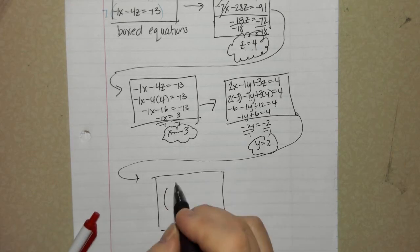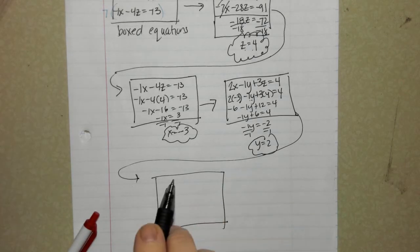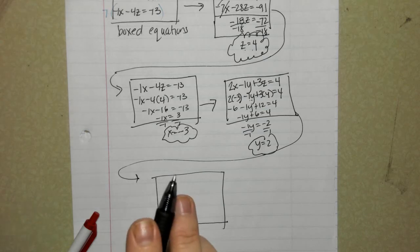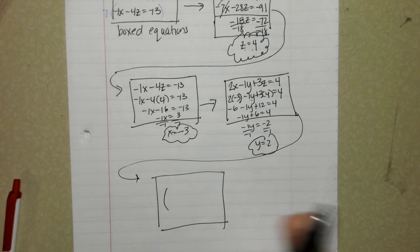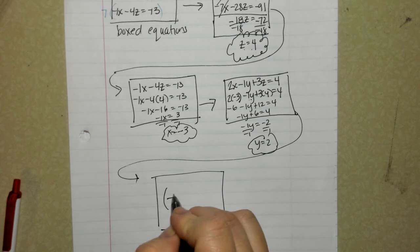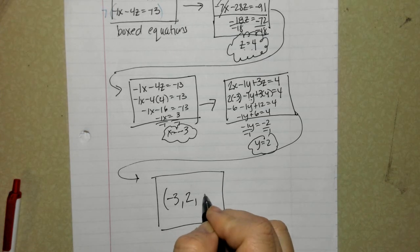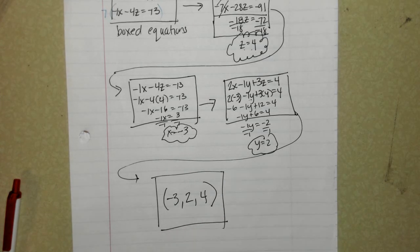When I'm done, I write my last box is an ordered triplet. You're used to ordered pairs where you write an x followed by y. Now, an ordered triplet, meaning 3, will go x, then y, and then z. In parentheses, x, y, and then z.